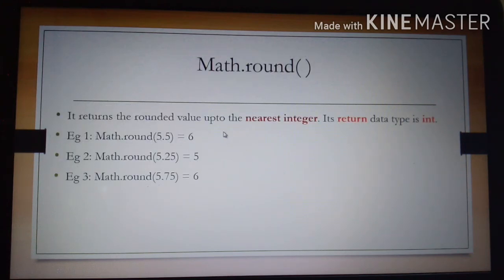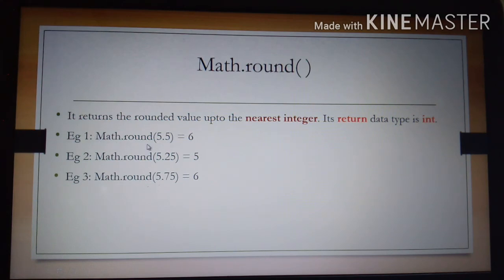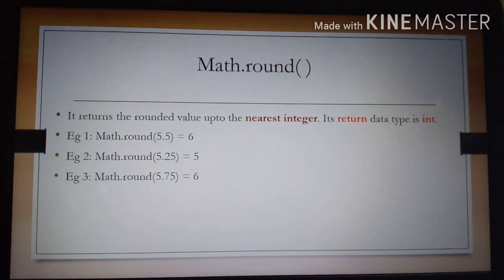Next is Math.round(). It returns the rounded value up to the nearest integer. Importantly, Math.round() returns an int data type, not a double value. For example, Math.round(5.5) equals 6 — not 6.0. Math.round(5.25) equals 5. If the decimal value is 0.5 or below, the lowest mathematical integer is returned; otherwise the highest is returned. So Math.round(5.75) will give the answer 6.